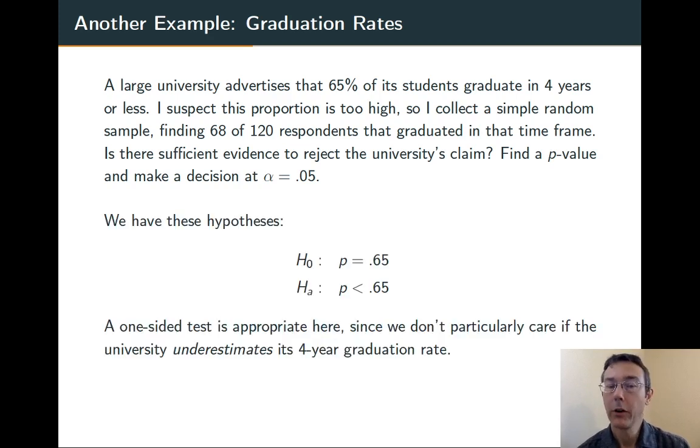As always, we want to start by specifically writing down a null and alternative hypothesis. The null hypothesis is that the results really are just due to random chance. That the proportion of students that graduate in four years or less really is 0.65.